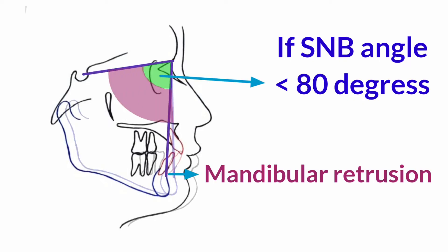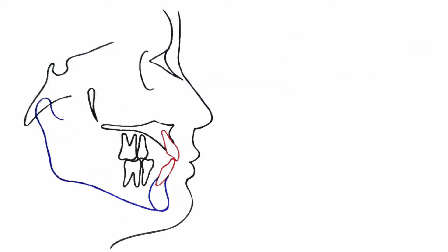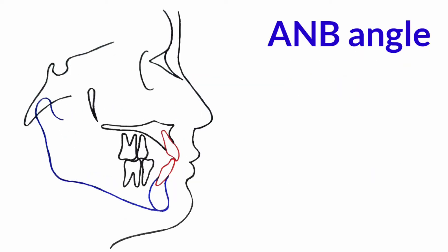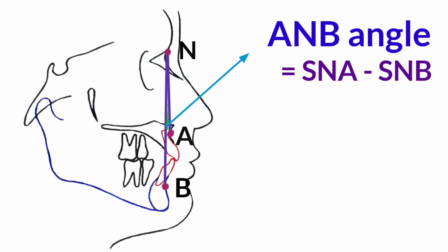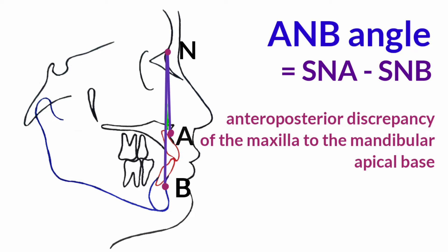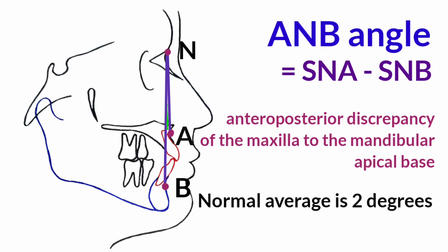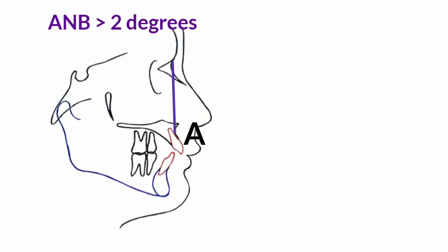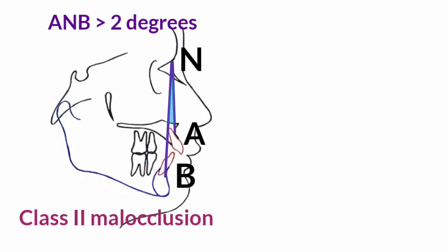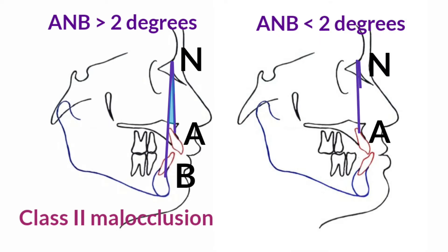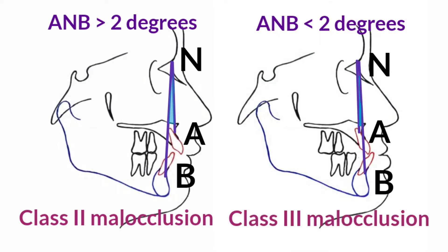If the SNB angle is less than 80 degrees, it indicates a retrusive mandible — the mandible is more backward than normal. The third angle is ANB, formed by joining point A, point N, and point B. We can also get this angle by SNA minus SNB. The ANB angle provides the anterior-posterior discrepancy of the maxilla to the mandibular apical base. The normal average of ANB is 2 degrees, derived from SNA 82 degrees minus SNB 80 degrees. An ANB angle greater than 2 degrees indicates a class 2 skeletal relationship, and less than 2 degrees indicates a class 3 skeletal relationship.